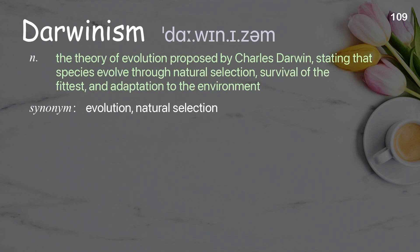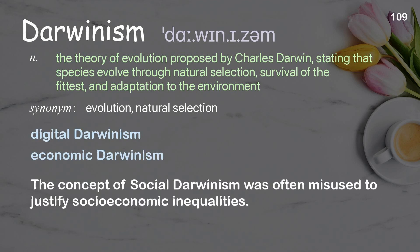Darwinism: The theory of evolution proposed by Charles Darwin, stating that species evolve through natural selection, survival of the fittest, and adaptation to the environment. Examples: Digital Darwinism. Economic Darwinism. The concept of social Darwinism was often misused to justify socioeconomic inequalities.